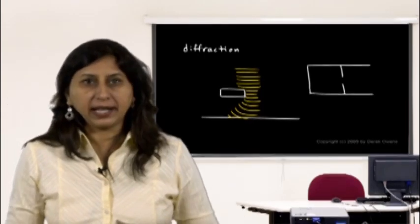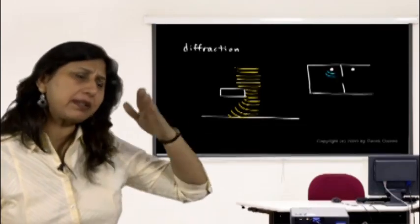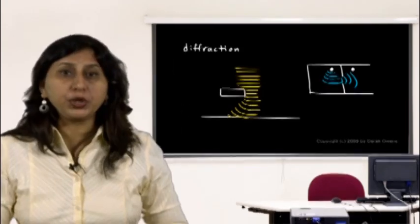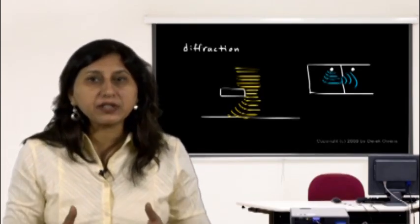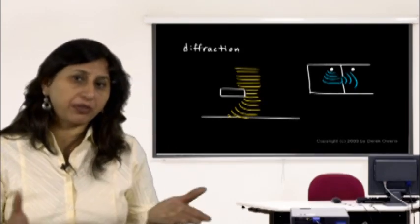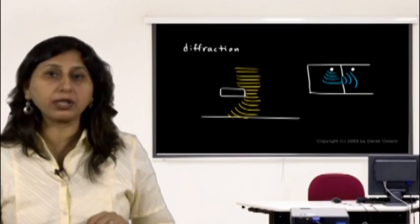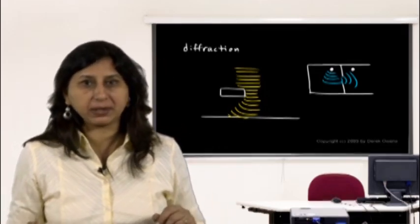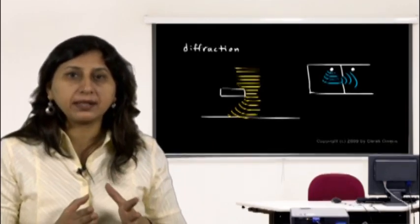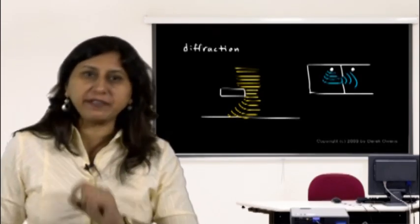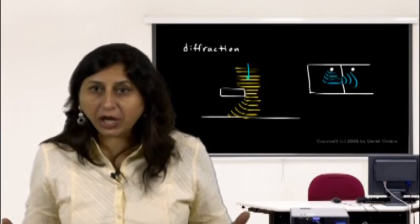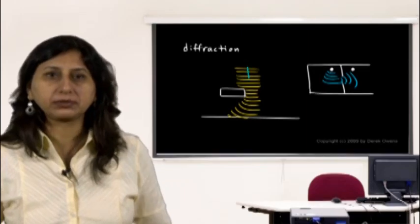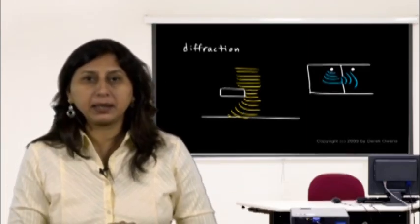Sound waves diffract all the time — you can hear someone around a corner even if you cannot see them. Light waves do not bend nearly as much; how much they bend depends on wavelength and frequency. Particles do not diffract — a bullet either misses or hits, it does not bend around a corner. Only waves do this, demonstrating that light behaves as a wave.